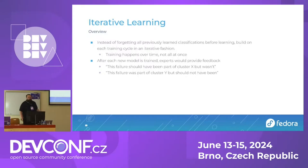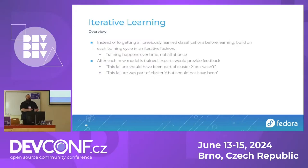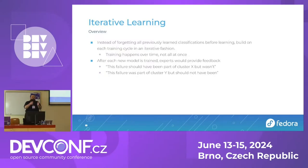So we come to this idea of iterative learning. Instead of a traditional experiment where you need all your data up front — because the training process means you forget everything when you start training again — it's a modification where instead of doing all your training at once, you train and every time you train you get a little bit better in an iterative fashion.